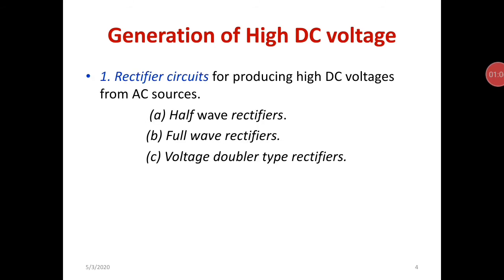First we will see the rectifier circuits for producing high DC voltages from AC sources. There are three methods: one is a half wave rectifier, second is a full wave rectifier, and third is voltage doubler circuits.